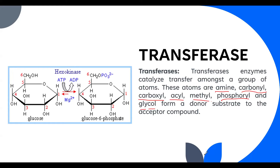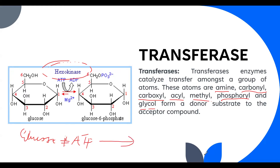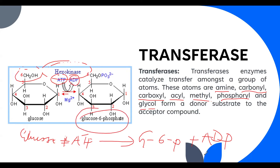A typical example of a transferase is hexokinase. Glucose plus ATP are the substrates; one phosphate group is transferred from ATP to glucose, producing glucose-6-phosphate and ADP. This phosphoryl transfer is a classic transferase reaction.